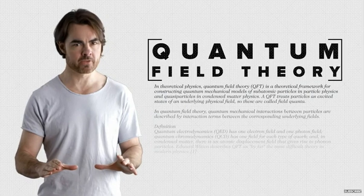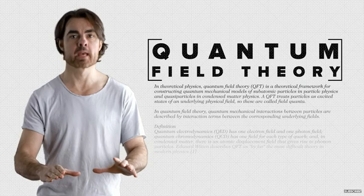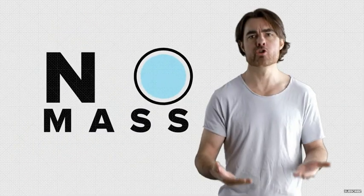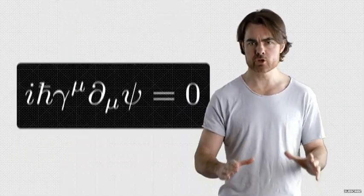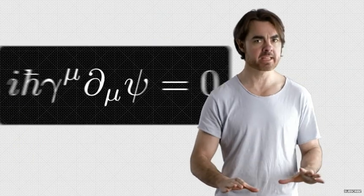It was strange that quantum field theory, as it stood in the 1950s, gave a perfect description of the electron, and yet predicted that the electron should have no mass. The basic QFT equations of all the components of the atom leave them massless.